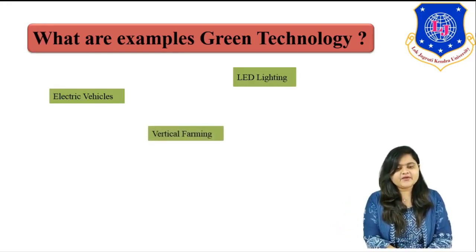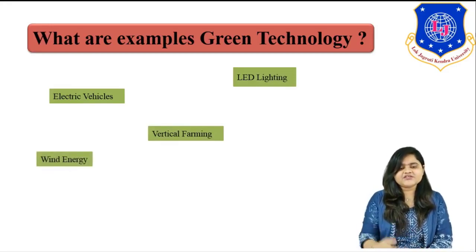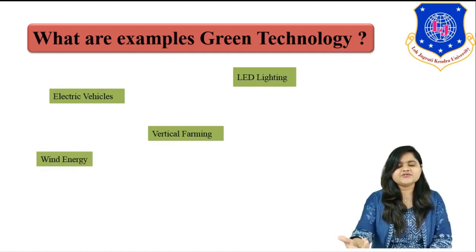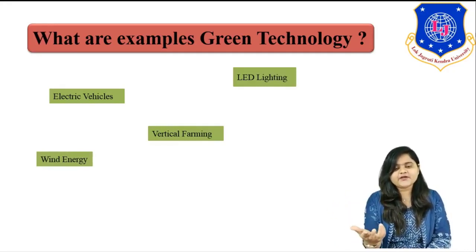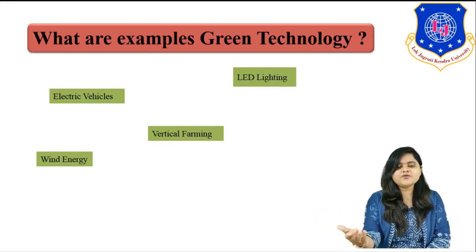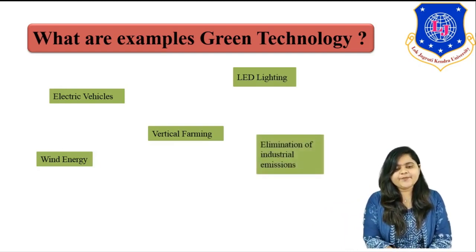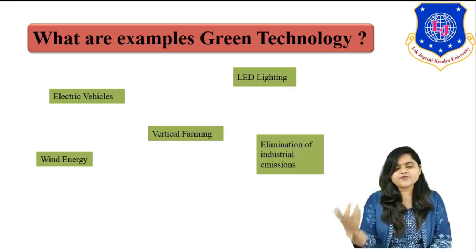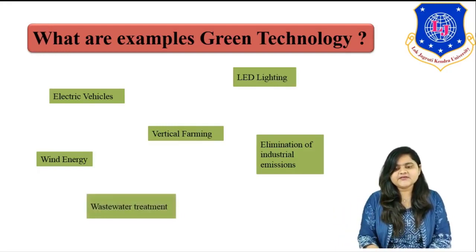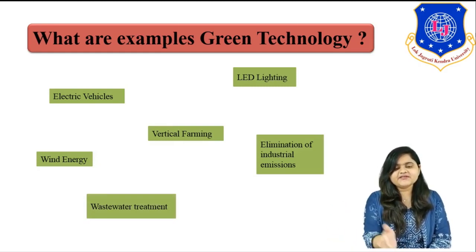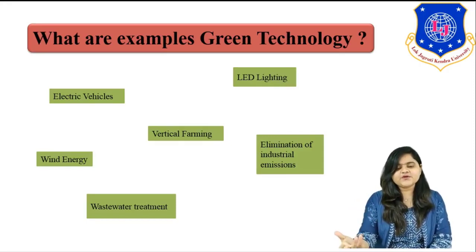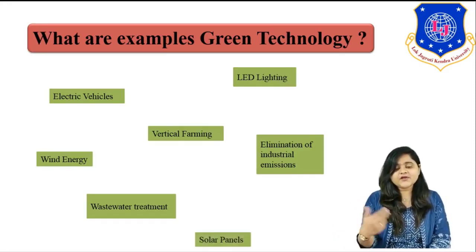Next example is vertical farming, which is also a nowadays emerging concept. Another is wind energy — try to use as many renewable resources as possible. Wind energy is a good example because we can generate a tremendous amount of electricity from it. Another example is elimination of industrial emissions, which are very hazardous and toxic. Also, wastewater treatment is green technology, as wastewater discarded into rivers or seas affects aquatic life. Another is solar energy and solar panels, now used in various buildings to generate electricity.